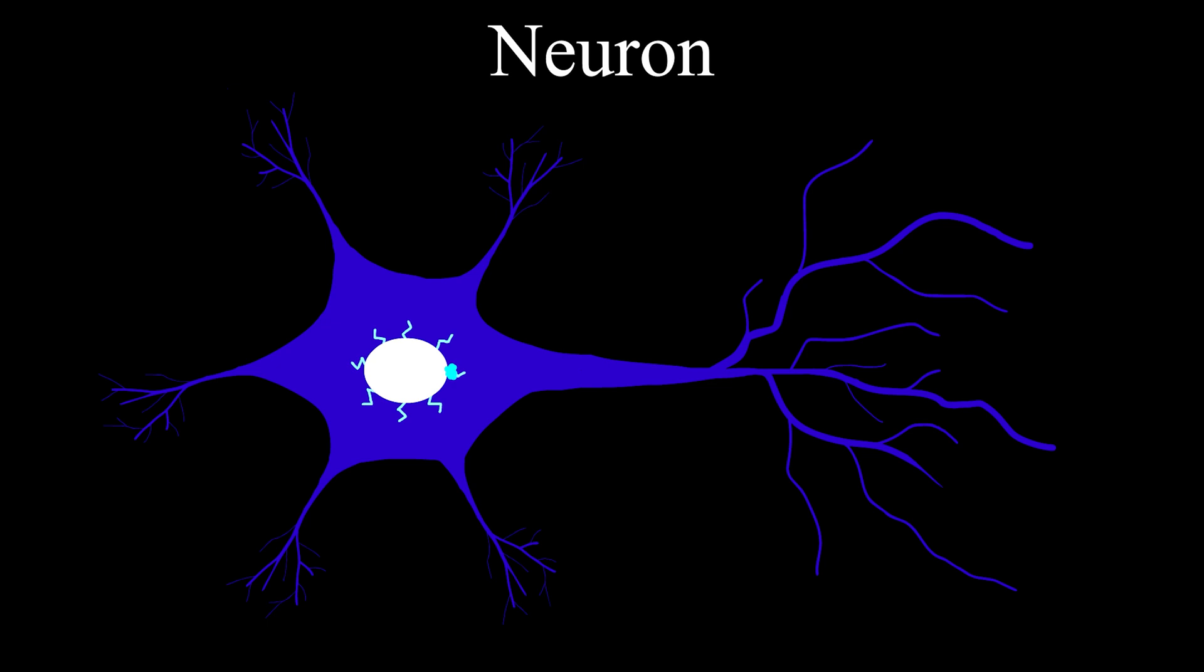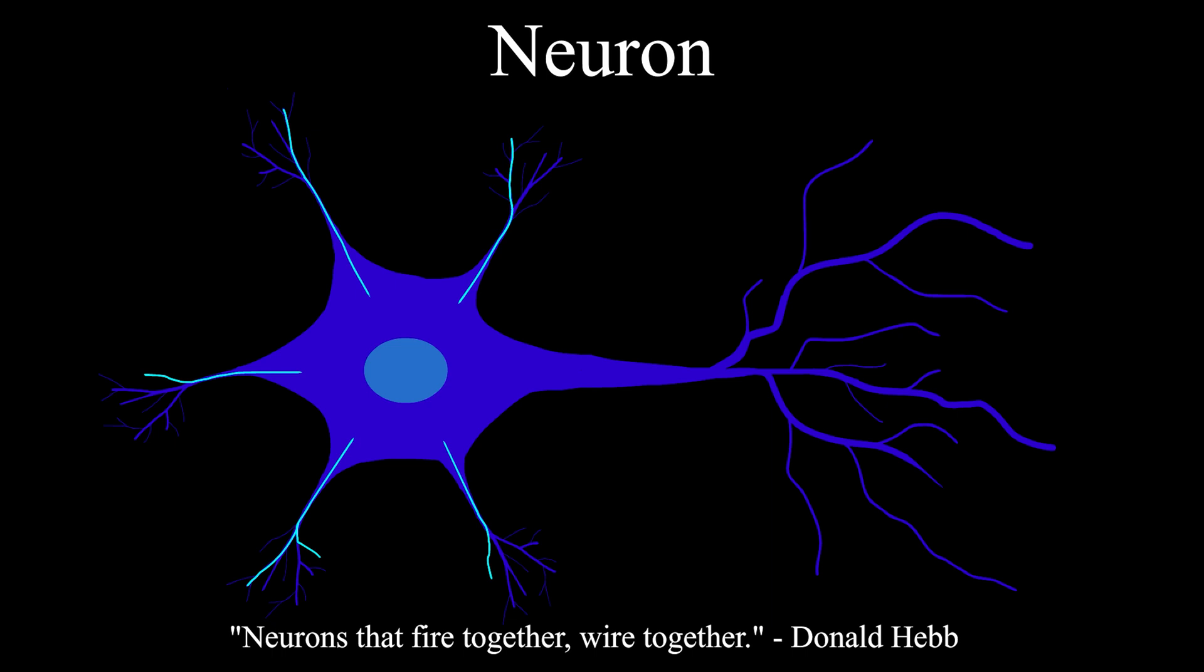The strength of the connection between each synapse to the neuron determines how strong the received pulse is. Neurons that fire together wire together. The more often neurons fire in sequence, the stronger the connection becomes. This changing of connection strength is what allows us to learn.